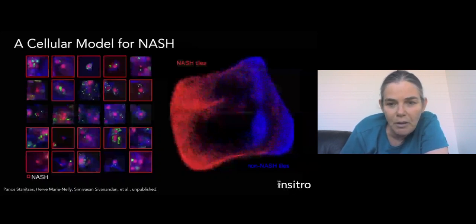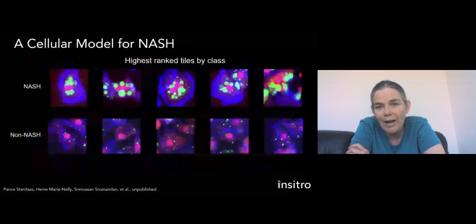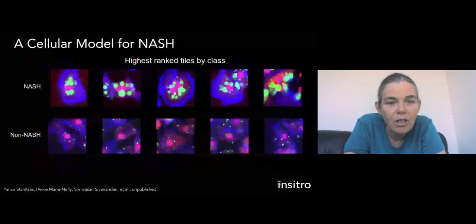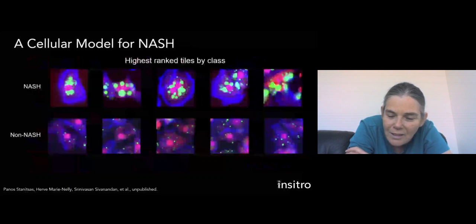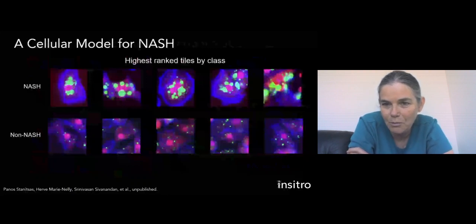So that is nice, but of course, we don't really care about the prediction problem here. We're using it as a surrogate to uncover underlying biology and a better understanding of the disease. So in order to gain that understanding, what we did is we looked at the most extremely ranked tiles for NASH versus the most extremely ranked tiles for non-NASH to really see what it was picking up on that allowed it to make that distinction. And what we see is that, the pink here is nucleus, the blue is cell membrane, and the green are lipid droplets. And what you see is a clear phenotypic difference of accumulation of large lipid droplets at the nuclear membrane. And that seems to be a phenotype that is quite relevant to the disease.